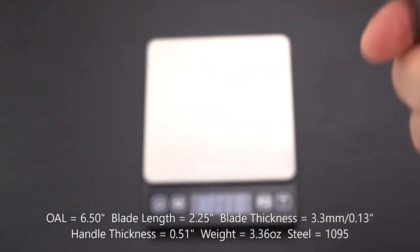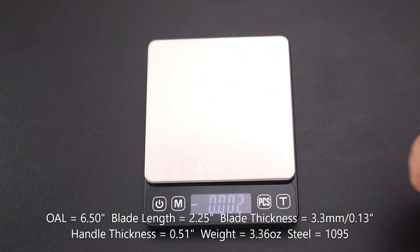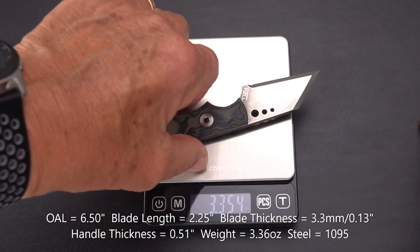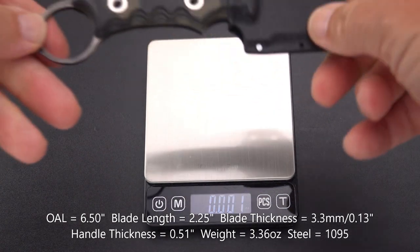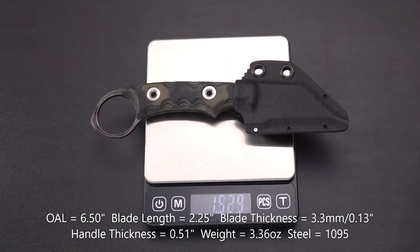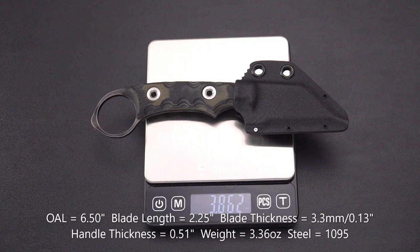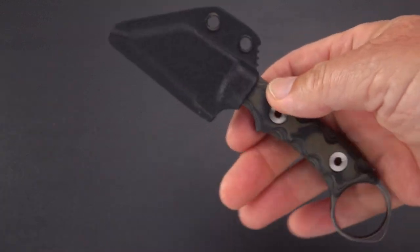Blade thickness in millimeters: 3.3, and if we go to inches: 0.13. Handle thickness: just over a half inch, which for a fixed blade knife you wouldn't want to go much thinner than that, I don't think. You want to be able to hold on to it, particularly a small knife with a short blade. Knife only: 3.35 ounces, and the sheath is going to be just a minimal add of weight. With the sheath we've got 3.86, so call it 3.9 ounces.